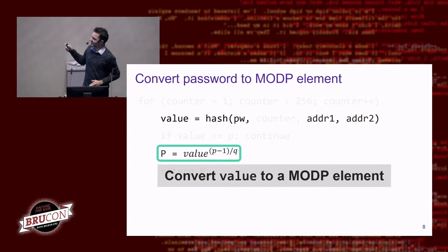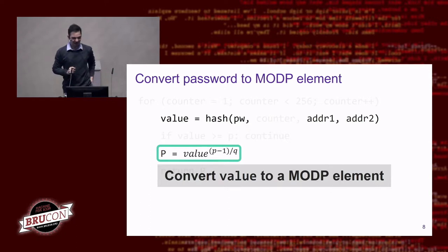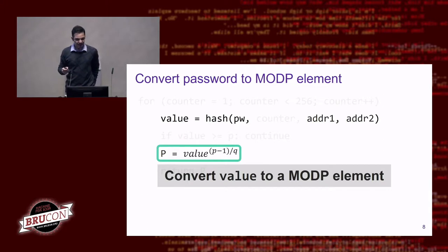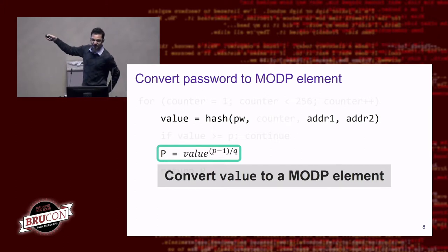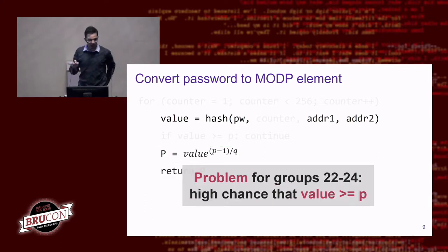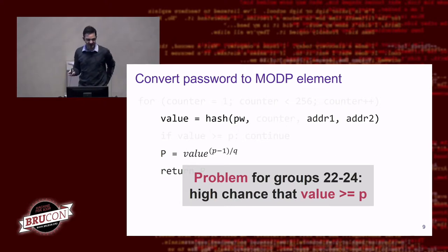This seems to work, but there is one small — and actually major — problem. For certain modP groups, there's a high chance that the hash output will be bigger than the prime of the modP group. If this value is bigger than the prime, the formula would not be 100% correct — it might introduce biases that an adversary can abuse. So we need to ensure this output value is smaller than the prime.